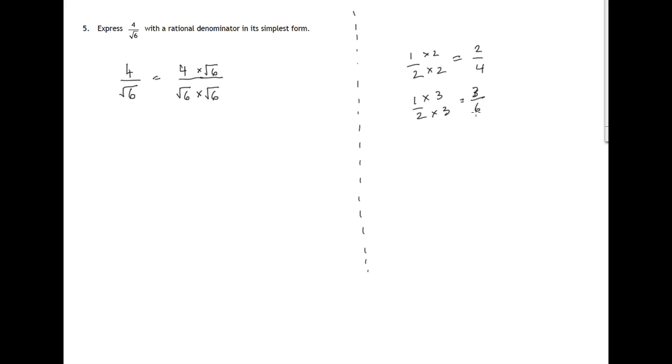Always multiplying top and bottom by the same number allows the fraction to remain the same. So in this way we can get rid of the root in the bottom.